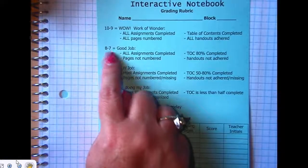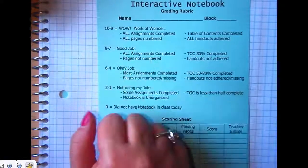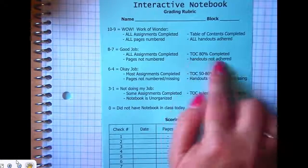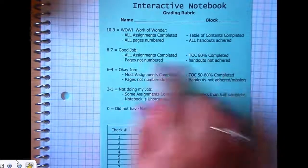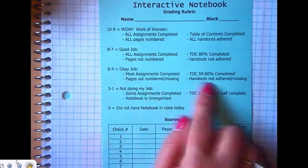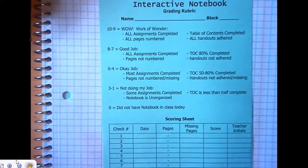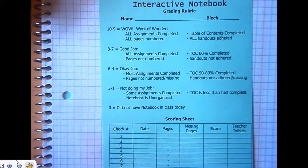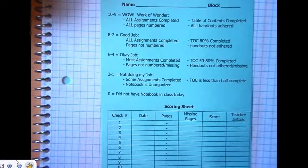It should be pretty easy to get between a 90 and a 100. What is this range right here? 70 to somewhere in the 80s. It just means you're doing a good job. All the assignments are completed, but maybe your pages aren't numbered. Maybe your table of content is only 80% completed. Your handouts aren't glued in. This means you've got some improvement to do. I'm not going to go over this anymore. Do you have any questions about it? No.